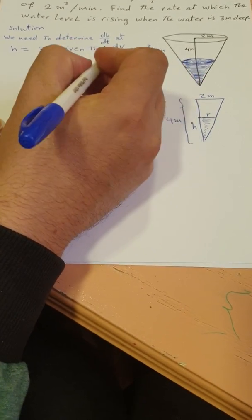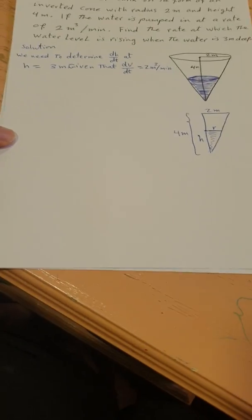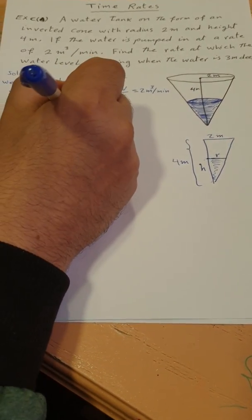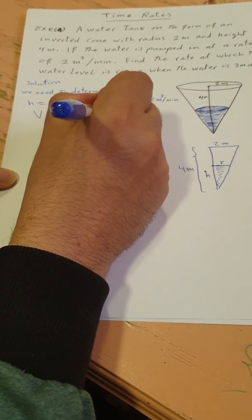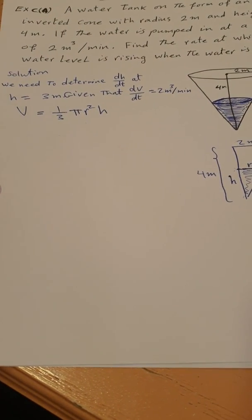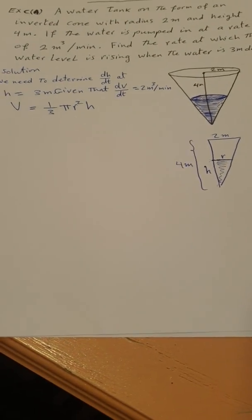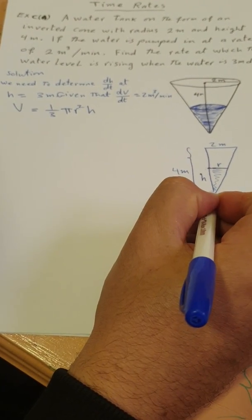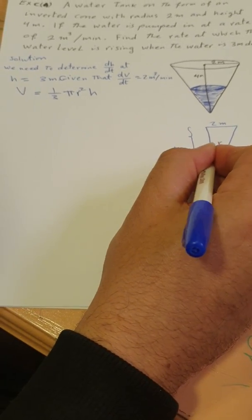We have the formula for the volume of a cone: V equals one-third pi r squared h. What we will do is find the relation between the height h and the radius r at time t of the water.